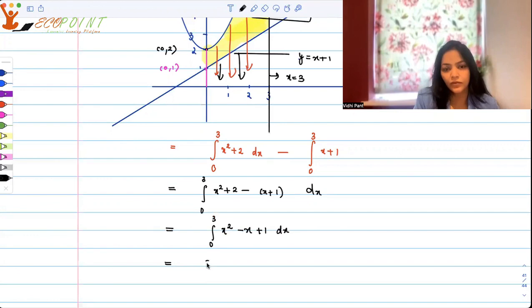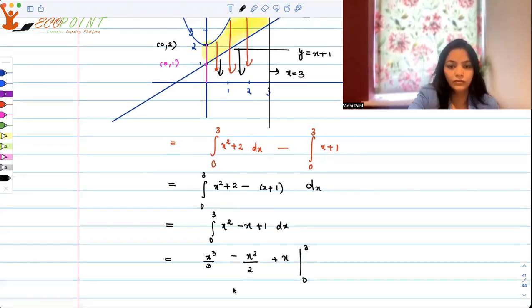And that's going to give you x cubed by 3 minus x squared by 2 plus x, everything from 0 to 3.